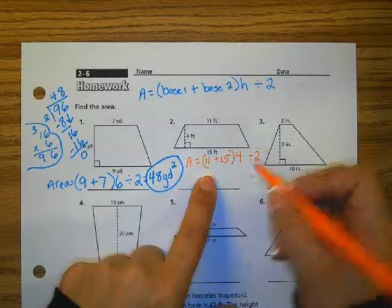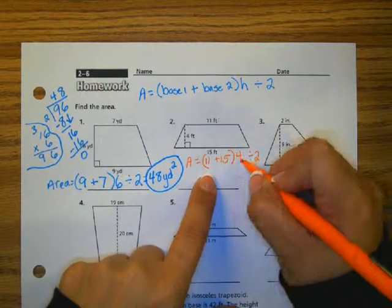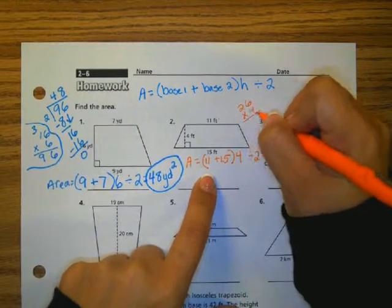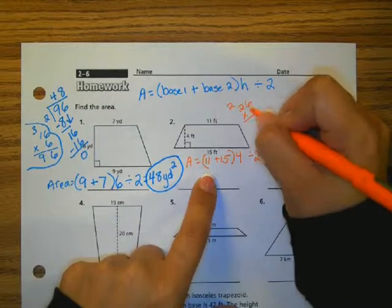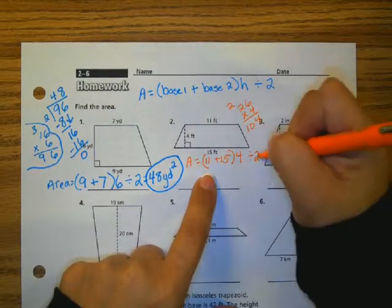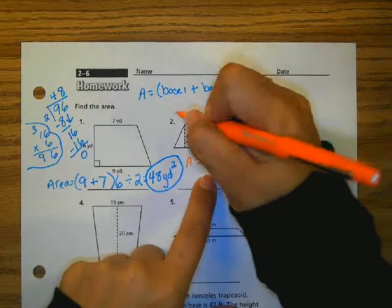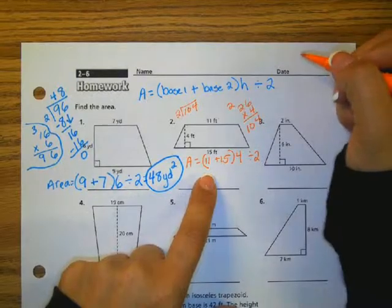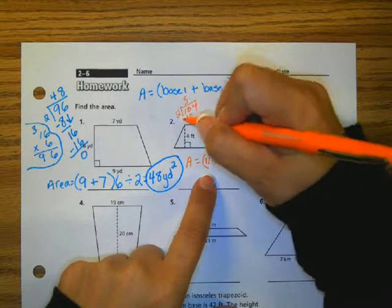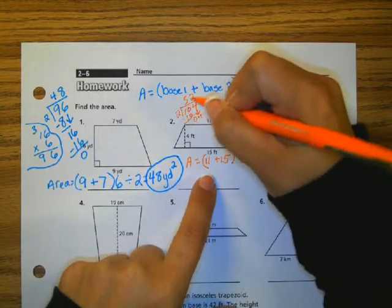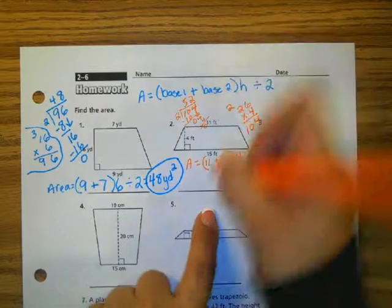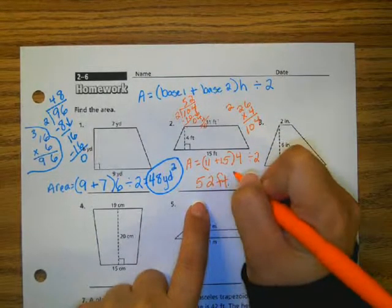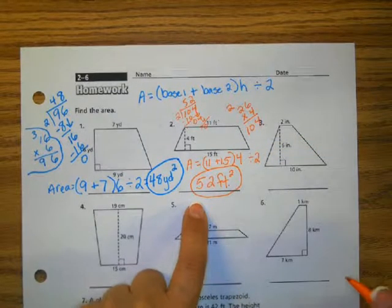11 plus 15 gives me 26. 26 times 4, and then divide by 2. My final answer would be 52 square centimeters.